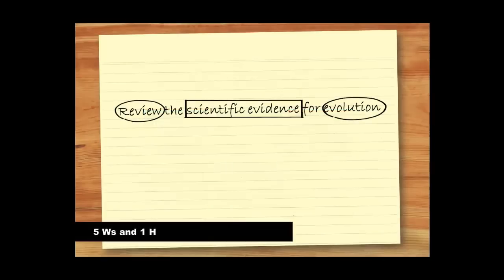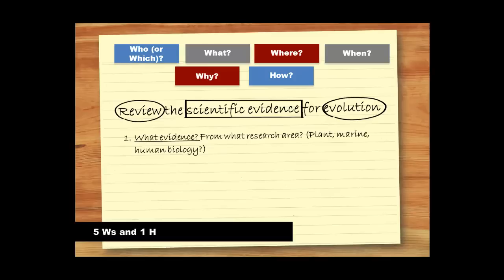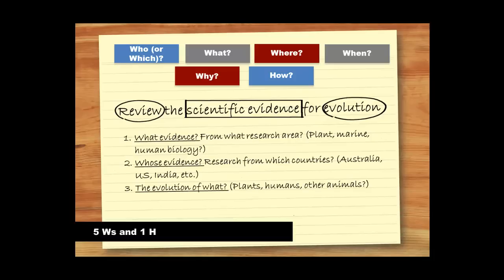Using the example we looked at earlier, when you apply the five Ws and one H to the assignment question, you can come up with other questions that might strengthen your focus. For instance, you could start interrogating the question and jotting down a few ideas such as: what evidence? What scientific evidence should you focus on, and from what research area? Whose evidence? Are you going to focus on research from a particular country? And the evolution of what exactly? Or even when? Are you going to look at recent studies or earlier research or both?